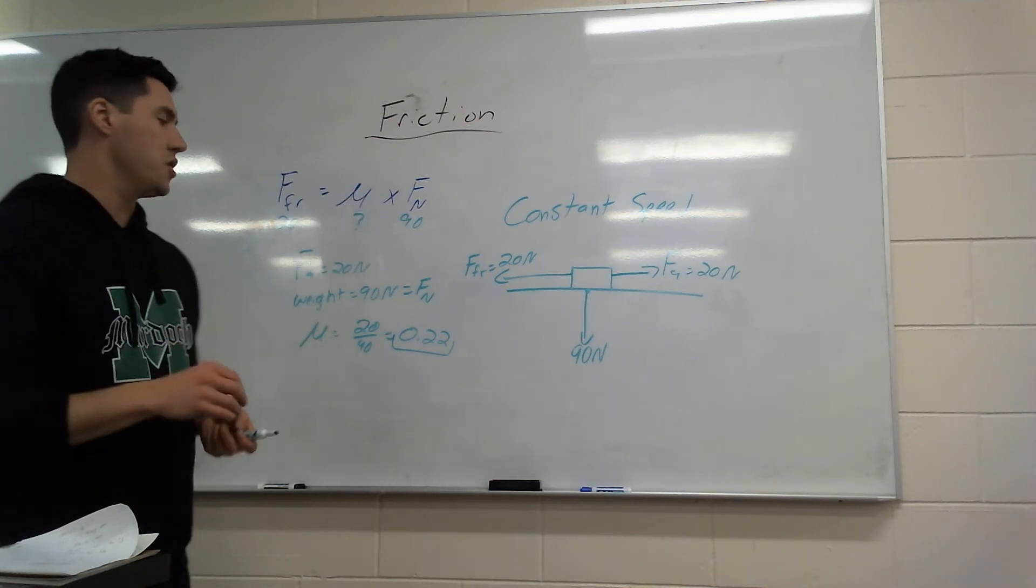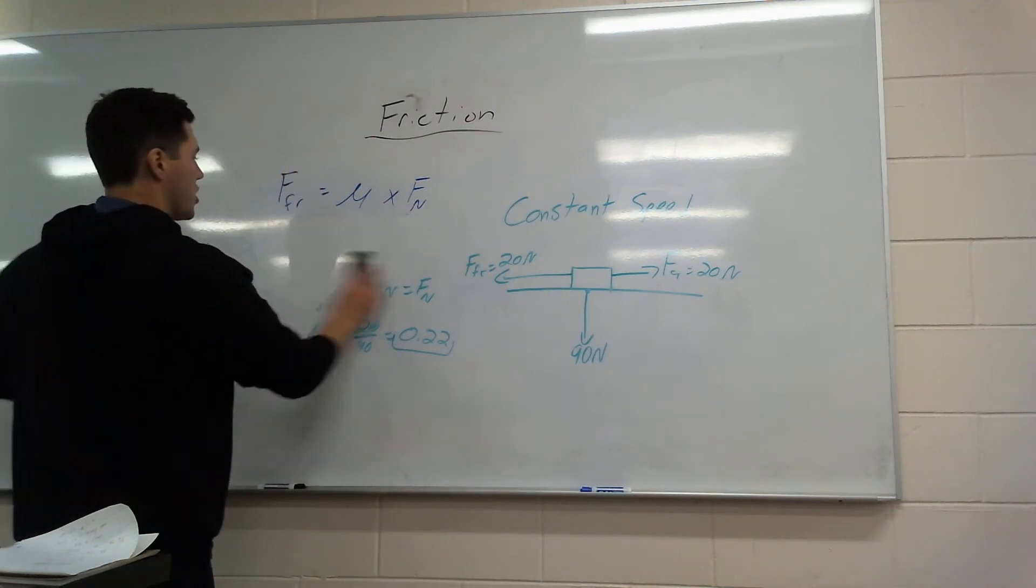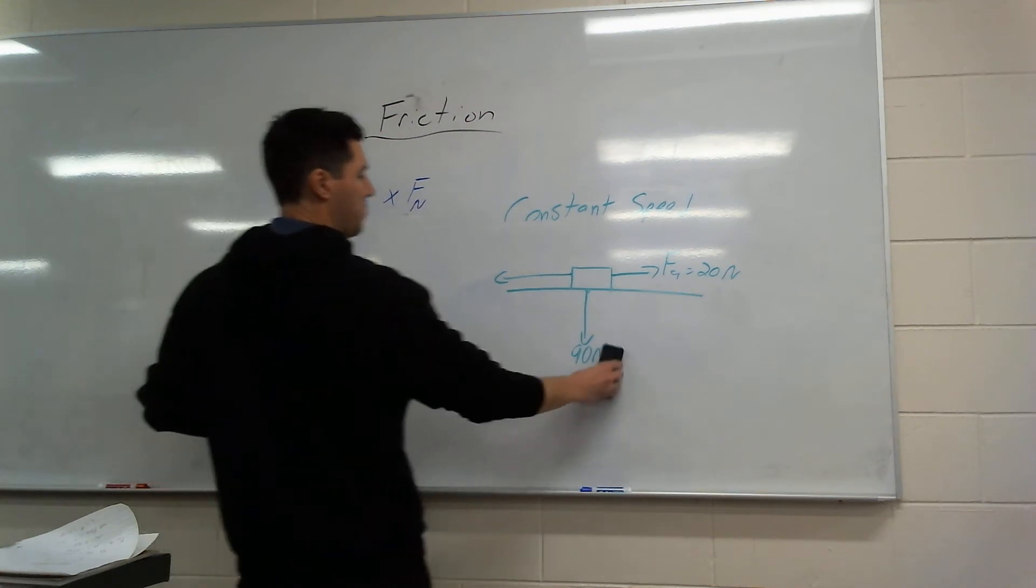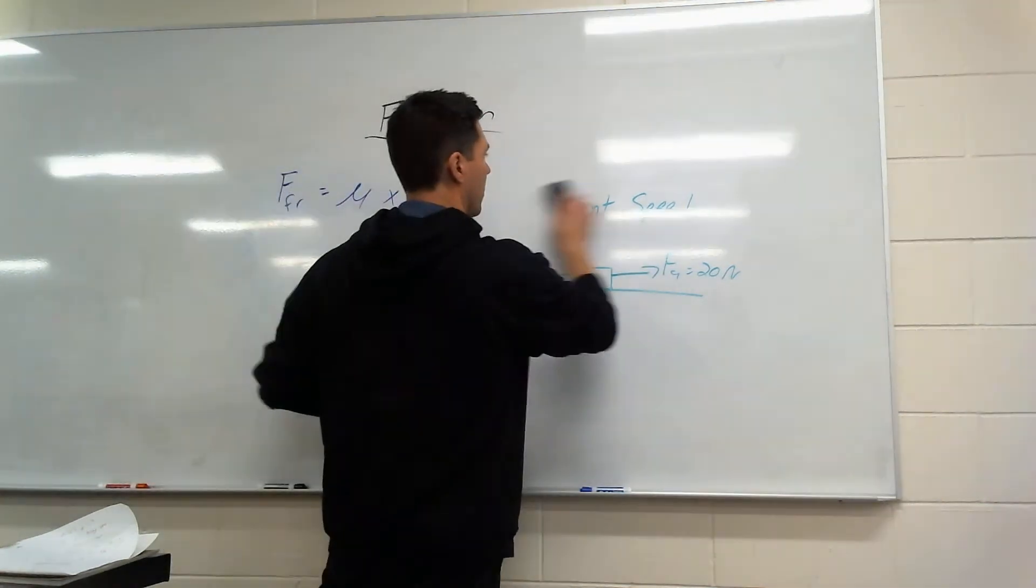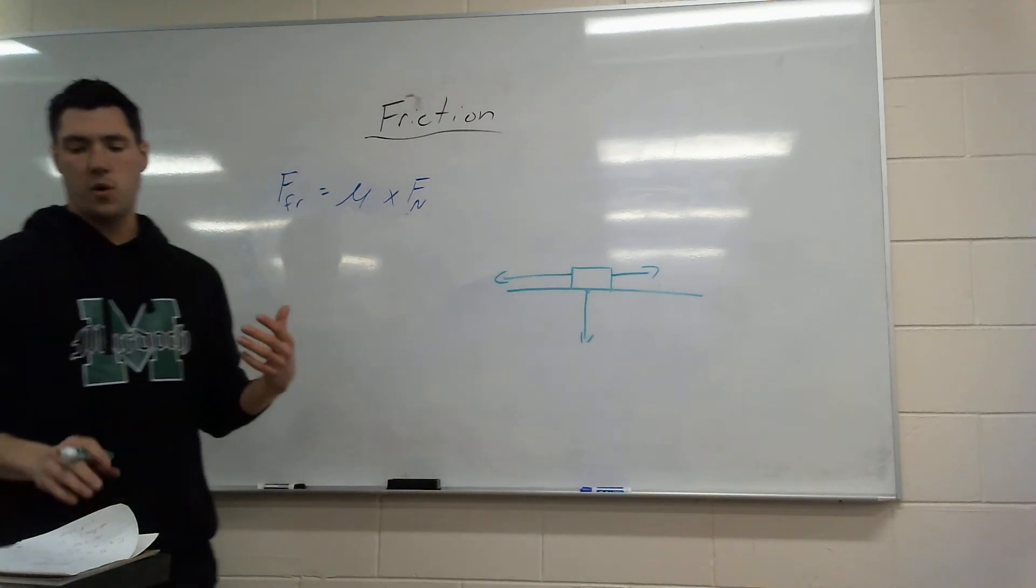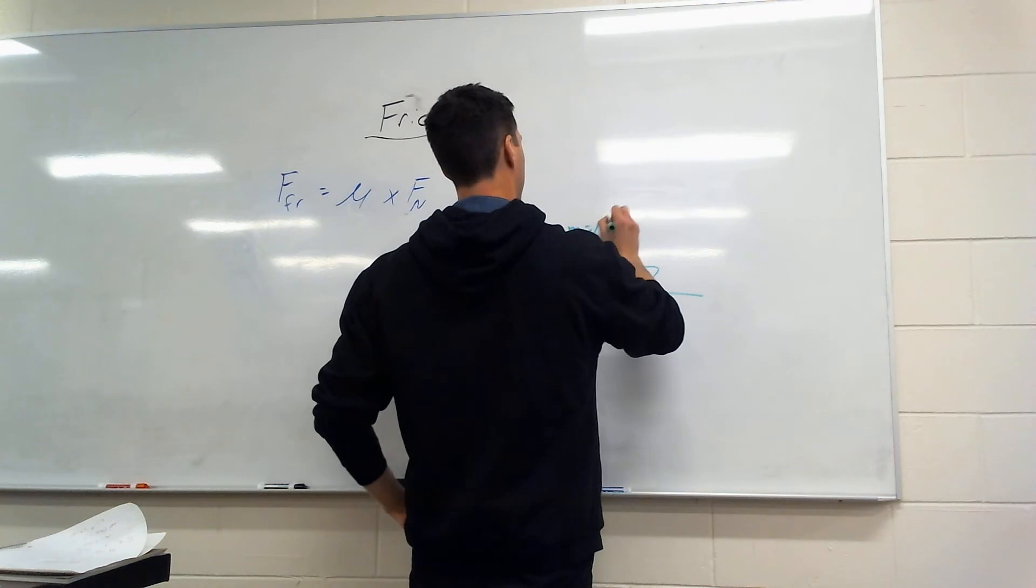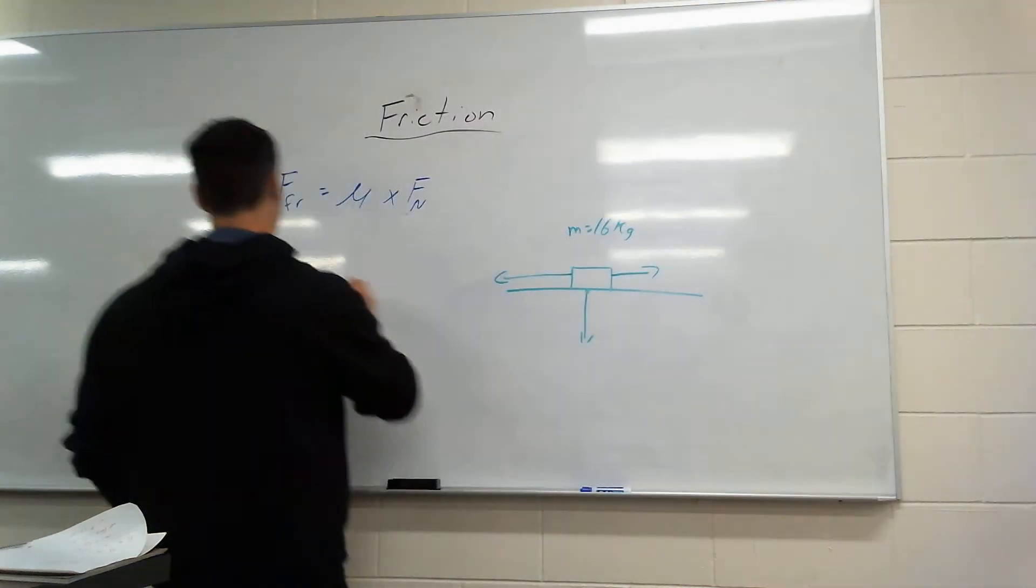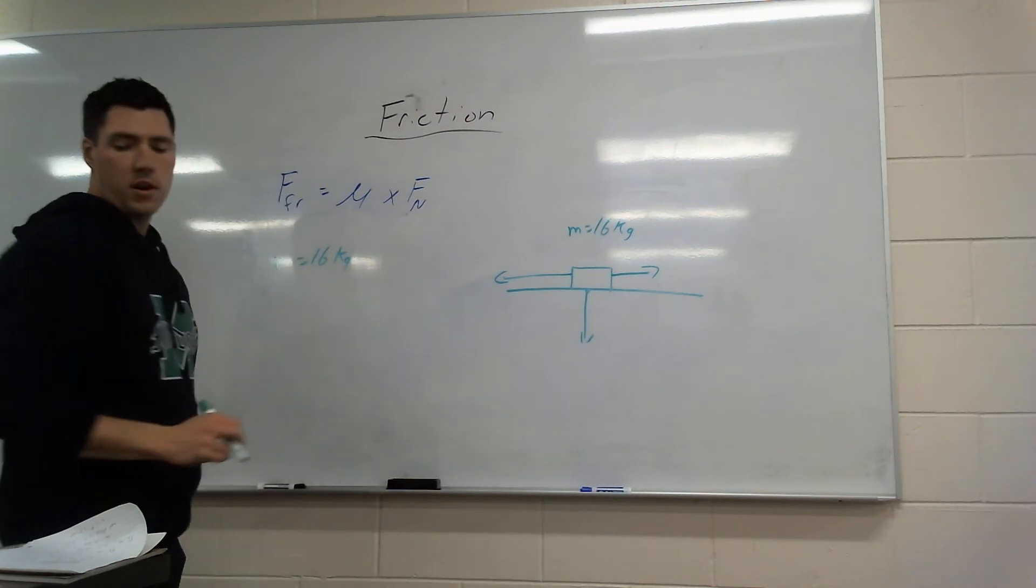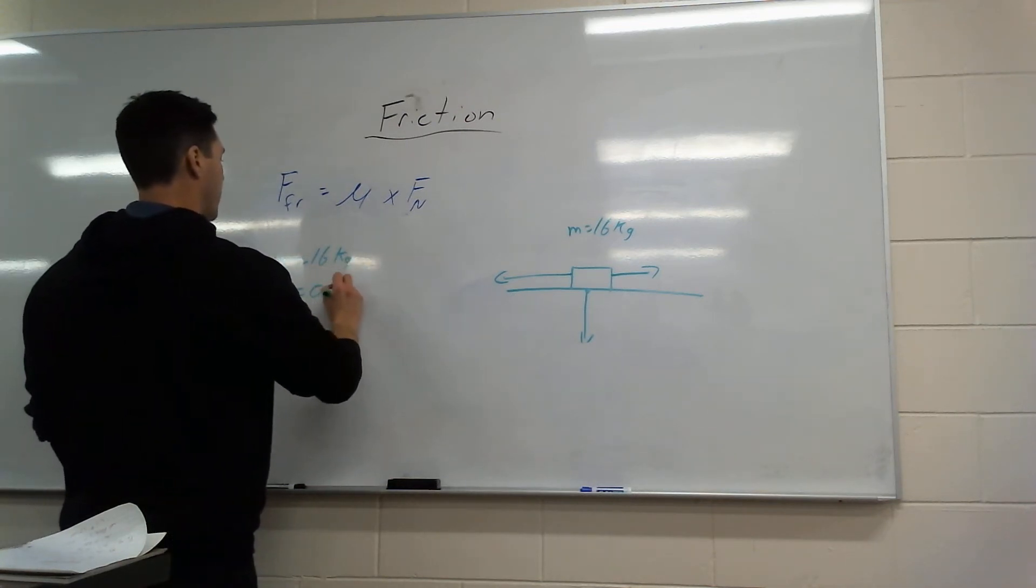There's question one. I'm going to do three questions in this little video. Question two. I'm going to leave this setup here, just get rid of the actual numbers. This next question says we have a mass of 16 kilograms. And then we're given a mu, a coefficient of friction, of 0.35.